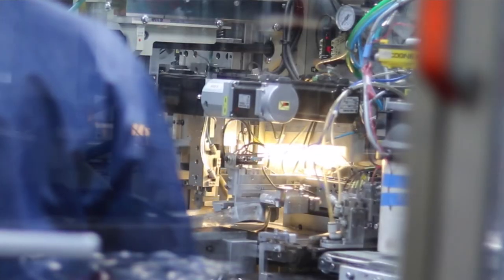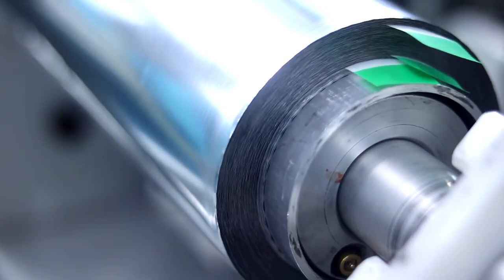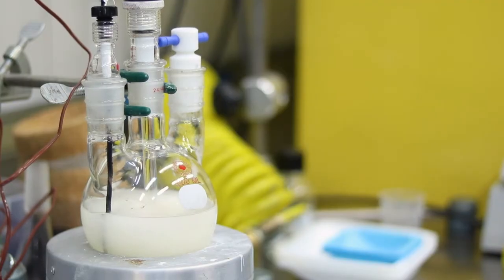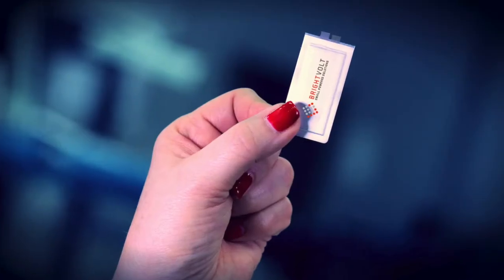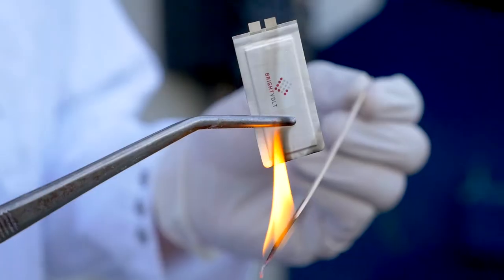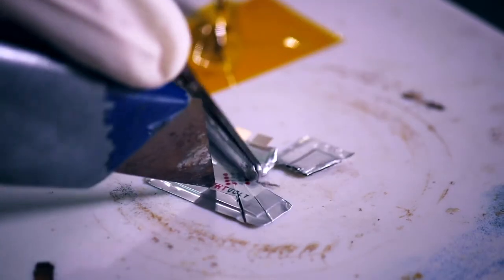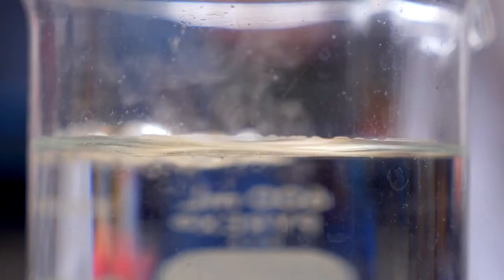Brightvolt's patented polymer matrix electrolyte system allows for the safety features of a solid state battery while maintaining the performance of a liquid electrolyte battery. This allows Brightvolt batteries to not only be ultra-thin and flexible, but safe in that they're non-flammable, non-combustible, and disposable.